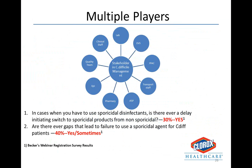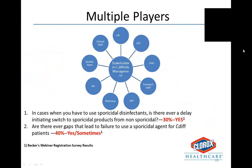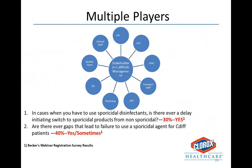All this to say, there are multiple players involved in C. difficile management. From the survey sent out at registration, 30% of respondents indicated there is sometimes a delay in initiating a switch to sporicidal products from non-sporicidal products. Additionally, 40% answered yes or sometimes to whether there are ever gaps that lead to failure to use sporicidal agents for C. difficile patients. Both these responses were related to challenges around communication and the multiple stakeholders involved in the process.